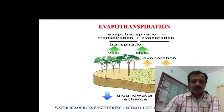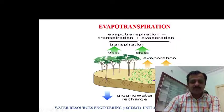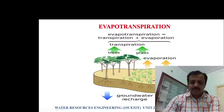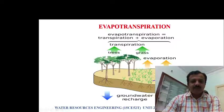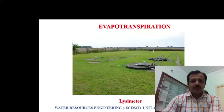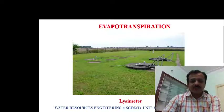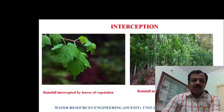The combined effect of evaporation and transpiration is called evapotranspiration. In places where moisture is present in the soil, that moisture also escapes to the atmosphere. The combined effect of water loss from soil and from trees and grass — transpiration plus evaporation — is called evapotranspiration. It is measured using an instrument called a lysimeter.